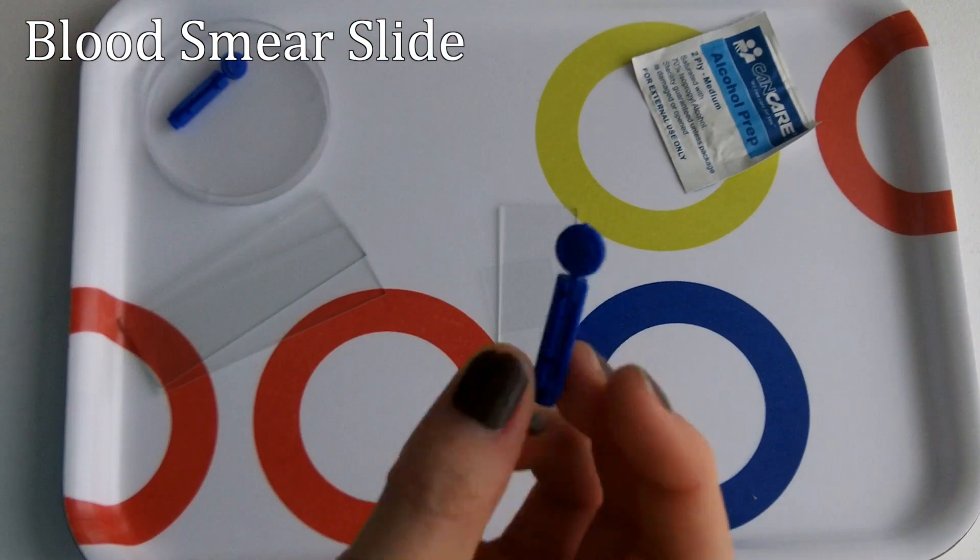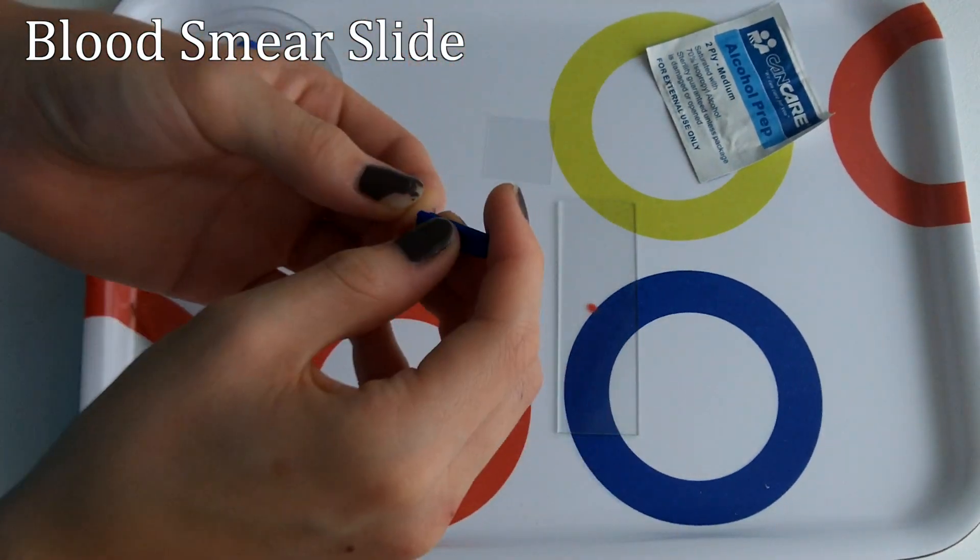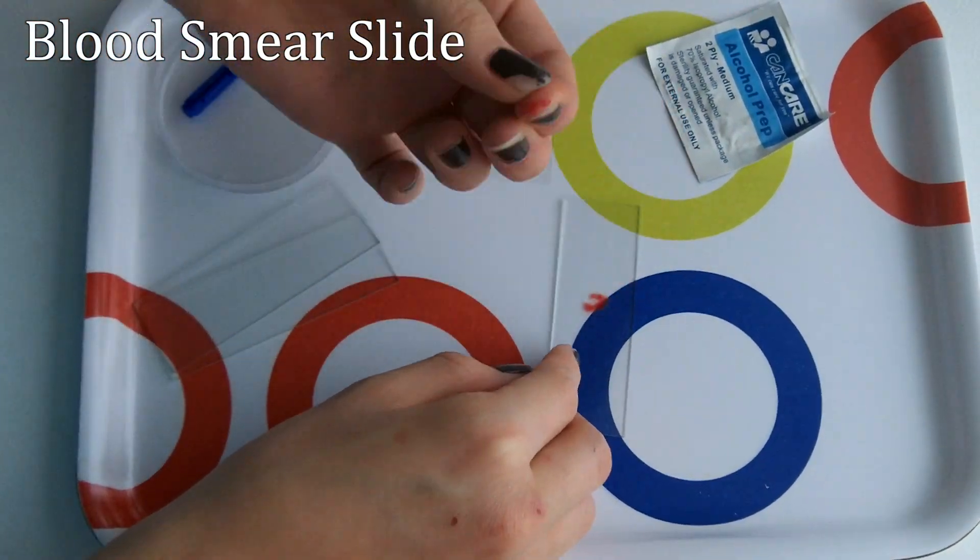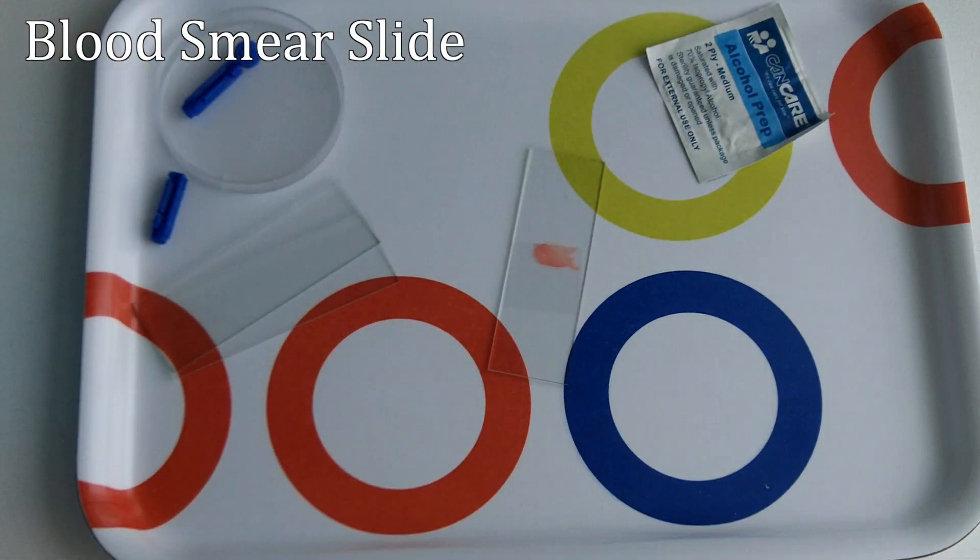To prepare the blood smear slide, use a lancet to draw blood from your fingertip. Place the blood into the center of the clean slide. Then, place a cover slip along the edge of the blood and drop it down to create a blood smear.